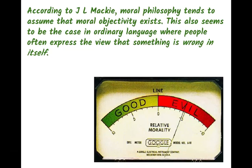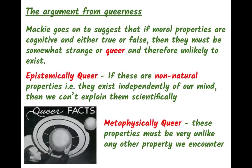The first theory is proposed by J.L. Mackie, an Australian philosopher. Mackie basically says that moral philosophy tends to assume that moral objectivity exists, and that this seems to be the case in ordinary language, where people often express the view that something is wrong in itself. So if we say that murder is wrong, we seem to be suggesting that it's morally objective — that murder is wrong in all instances and wrong in itself as a standalone concept. Mackie disputes this.